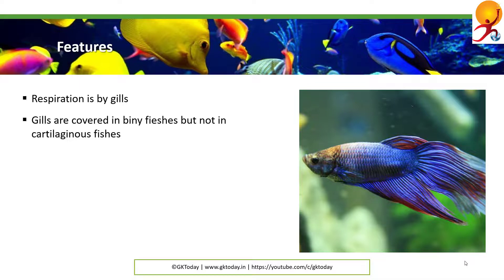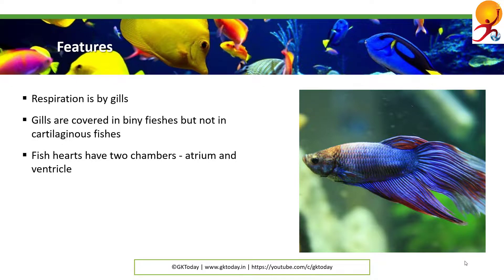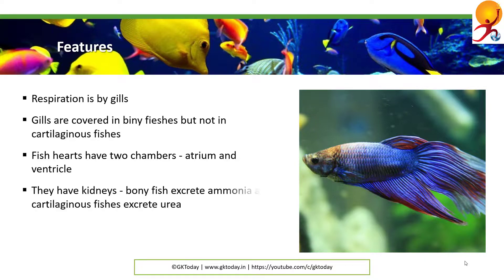Gills are covered in bony fishes while they are not covered in cartilaginous fishes. The fish heart has only two constitutive chambers called atrium and ventricle. Fish have kidneys which serve as excretory organs. While bony fishes excrete ammonia, cartilaginous fishes excrete urea as nitrogenous waste.